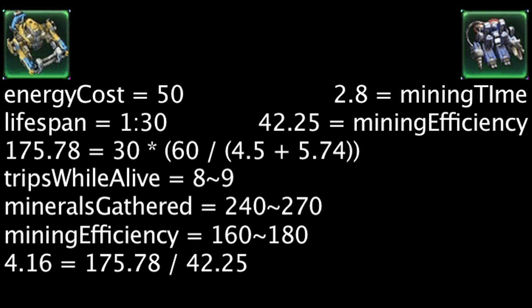Additionally, an SCV has a cost of 50 minerals while the mule has no mineral cost, further increasing its efficiency. Overall, I want you to keep in mind a mule is 4.16 times more efficient than an SCV during its lifespan.